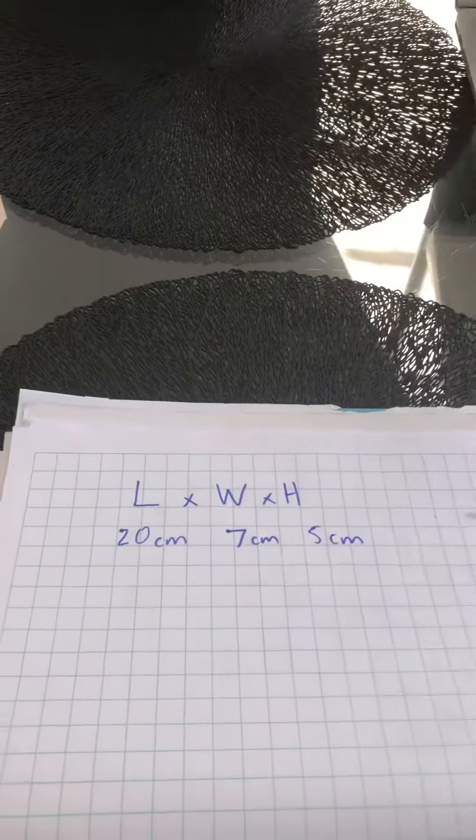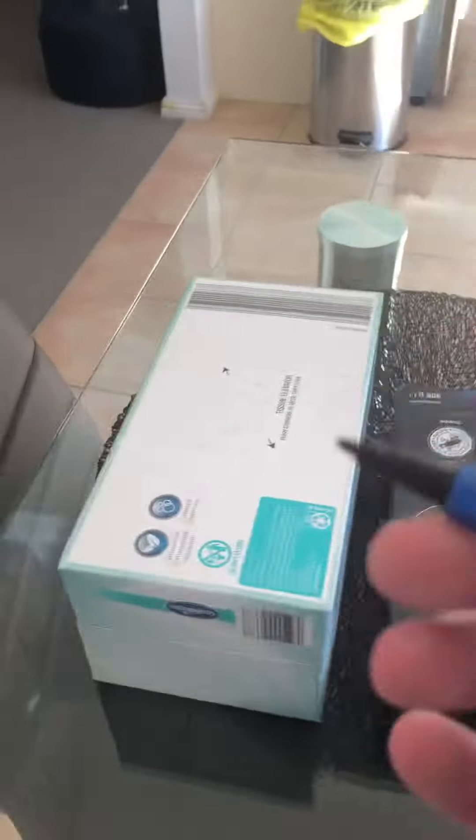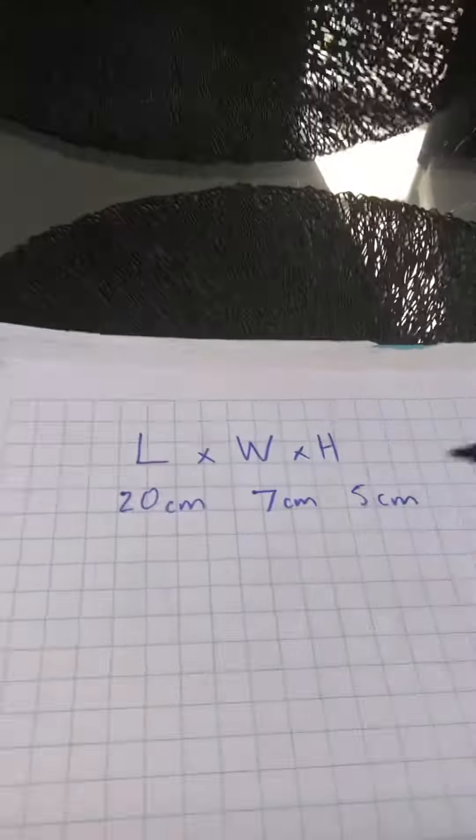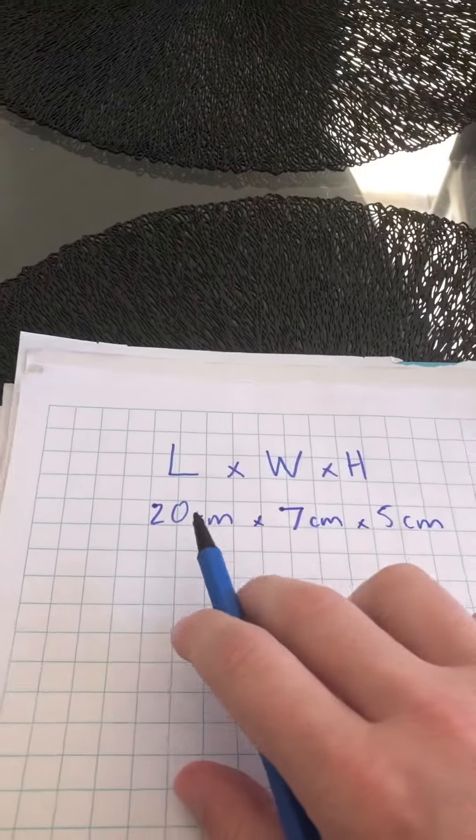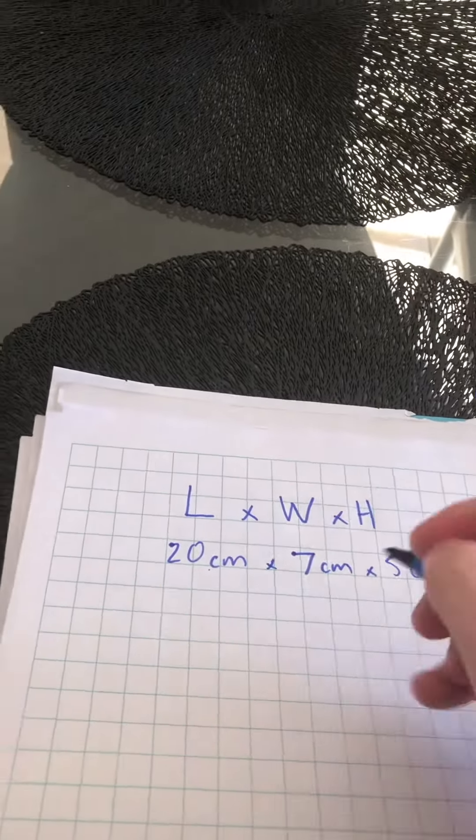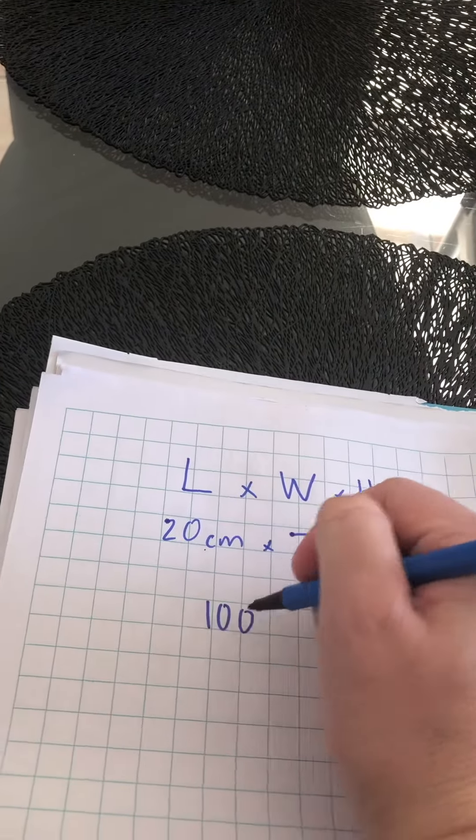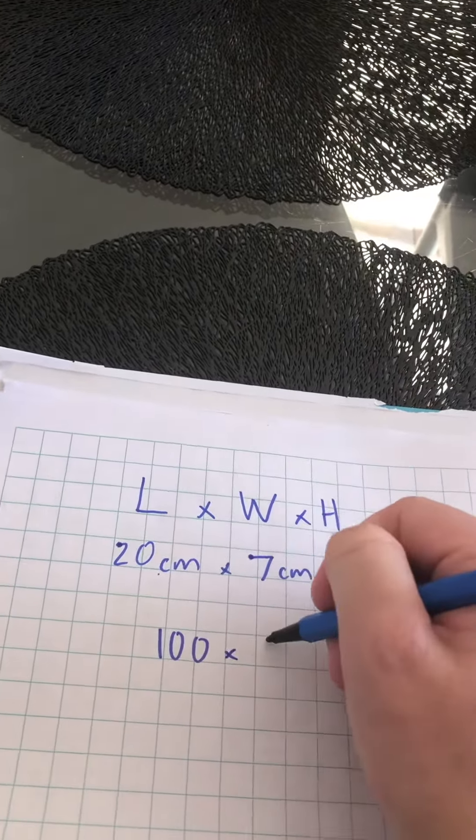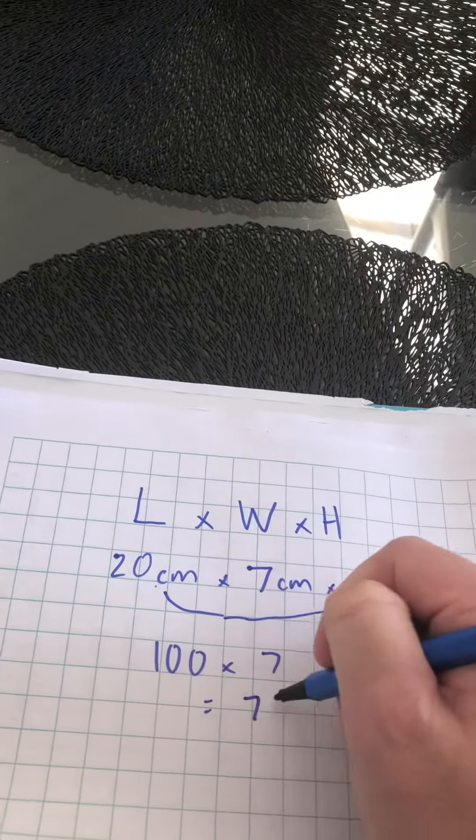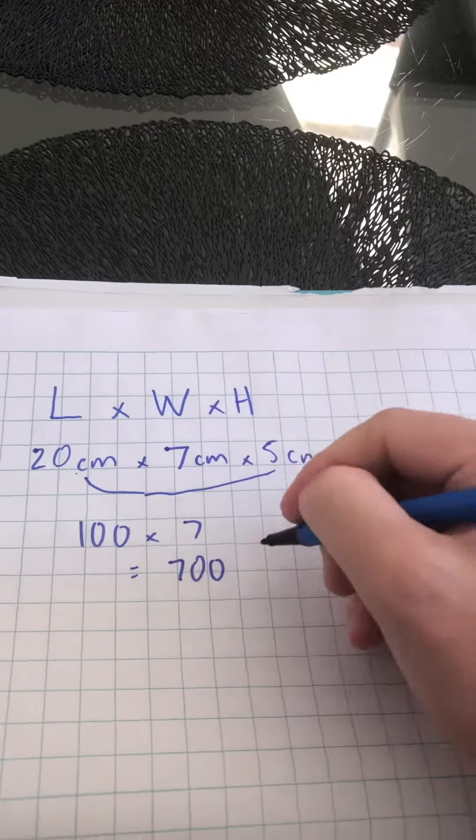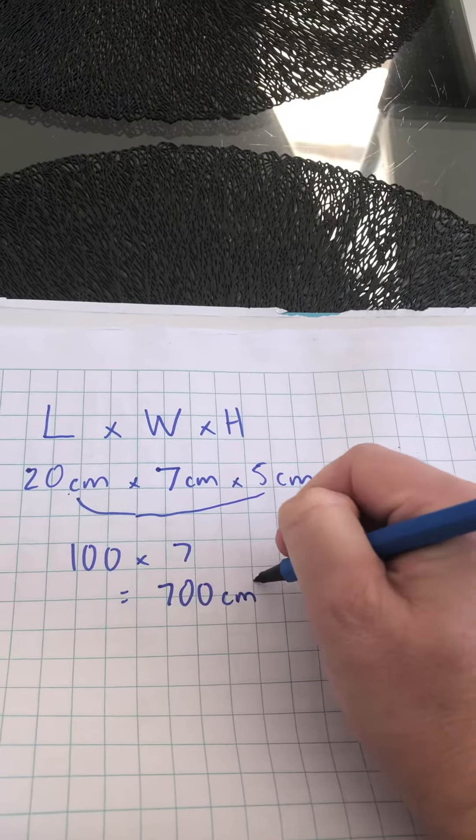Now in order to find out how much space the tissue box takes up in our world, I need to multiply all of these numbers together. So I'm going to go here. 20 times 5 is 100. Multiplied by 7 equals 700. Now I use centimetres here. I'm going to go centimetres cubed.